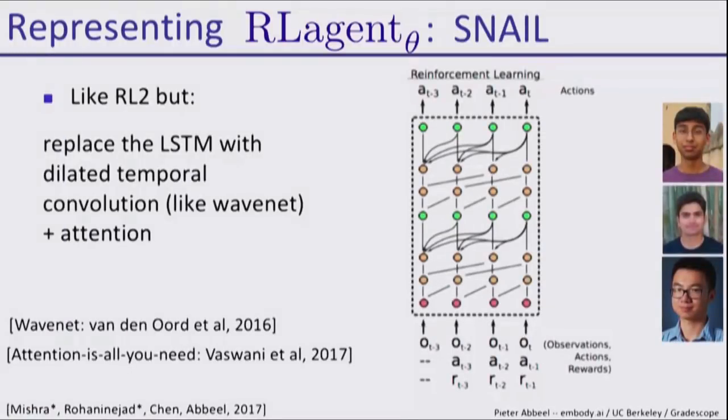You don't have to put an RNN underneath necessarily. You can put something else, for example, a WaveNet-like architecture, dilated temporal convolutions, but then maybe with attention also so you can see more detail from the past than a WaveNet would allow. You can use the exact same objective, just a different architecture for the agent underneath.